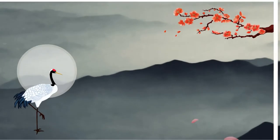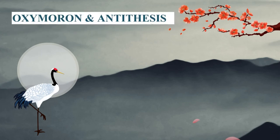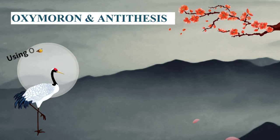Now let's move on. We shall now do two figures of speech together, and they are oxymoron and antithesis. Both of them use opposite or contrasting ideas, and therefore people are more likely to get confused between the two concepts. Though they both use contrasting notions, how they are used makes all the difference.